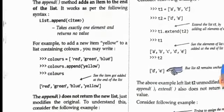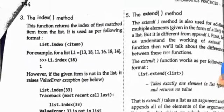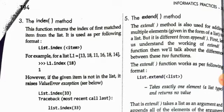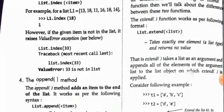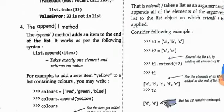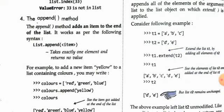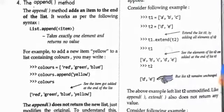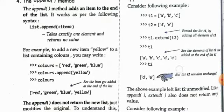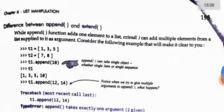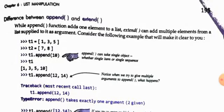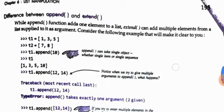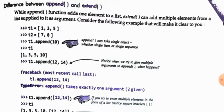The extend() method is used to add multiple elements to a list. For example, if t1 = ['a', 'b', 'c'] and t2 = ['d', 'e'], writing t1.extend(t2) makes t1 become ['a', 'b', 'c', 'd', 'e']. The key difference: append adds a single element, while extend adds multiple elements — both add at the end of the list.